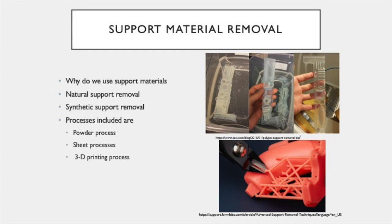The first process we are going to talk about is support material removal. The reason we use supports is to brace areas where it might be thin in our alternative manufactured part, or there may be some part that needs to have some kind of structure to hold it up. Support materials can be classified into two different categories: natural supports and synthetic supports. A natural support is defined as a material which surrounds the part and helps the building process. In this case, a part is usually fully built or enclosed in the build material and must be removed for use in its intended purpose. Some very common manufacturing processes which use natural supports are powder and sheet based processes.